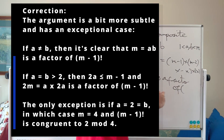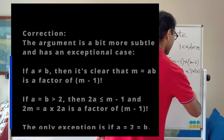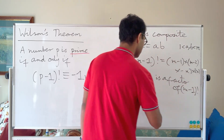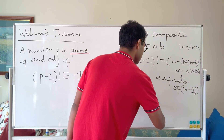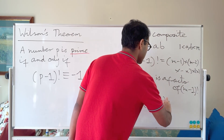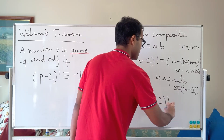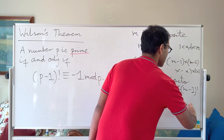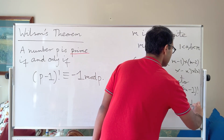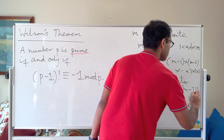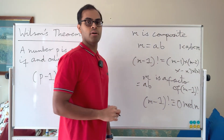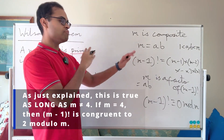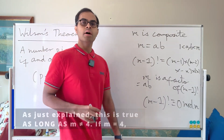Since m is a factor of (m-1)!, when you take the remainder when you divide (m-1)! by m, it's going to be 0. So (m-1)! is congruent to 0 modulo m, not -1 modulo m.